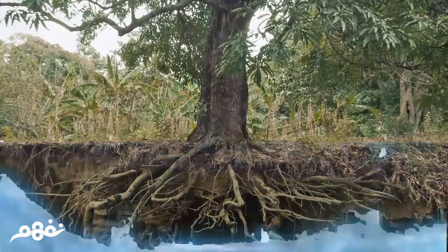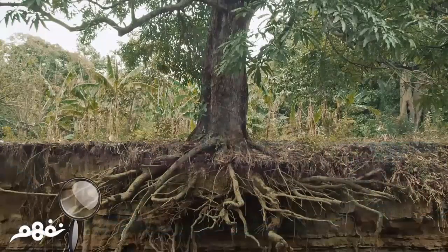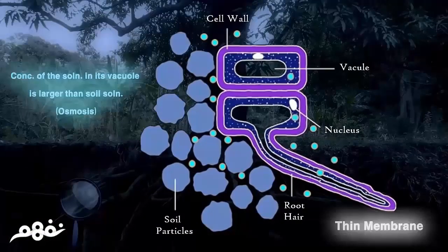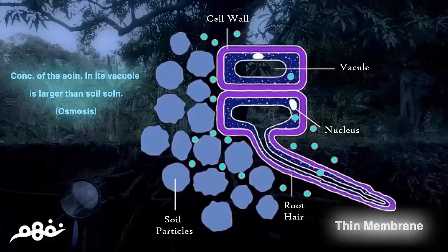The age of a root hair does not exceed a few days, so these root hairs are replaced continuously. If we look at a root hair, we notice that it is lined on the inside with a thin layer of cytoplasm and has a large vacuole. It also has a thin membrane that allows penetration of water and salts through it, and it secretes a sticky substance to help it penetrate the soil.